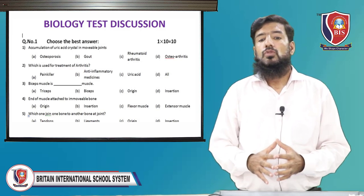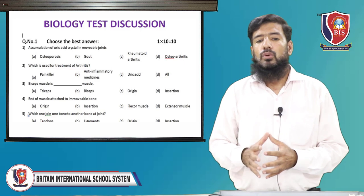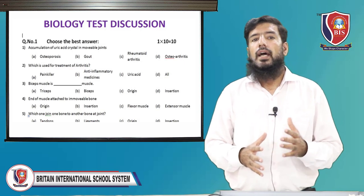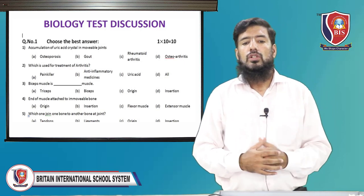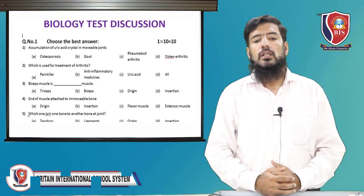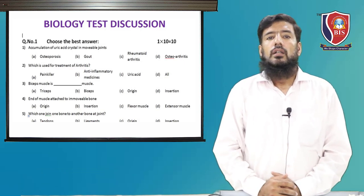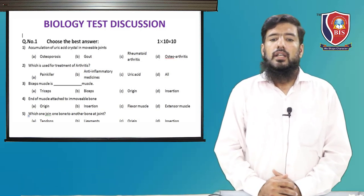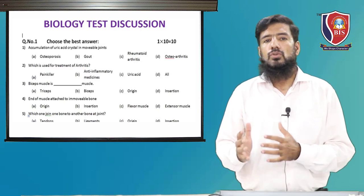MCQ 4: the end of the muscle attached to the immovable bone is known as origin. The end of the muscle attached to the immovable bone — that bond is called origin.